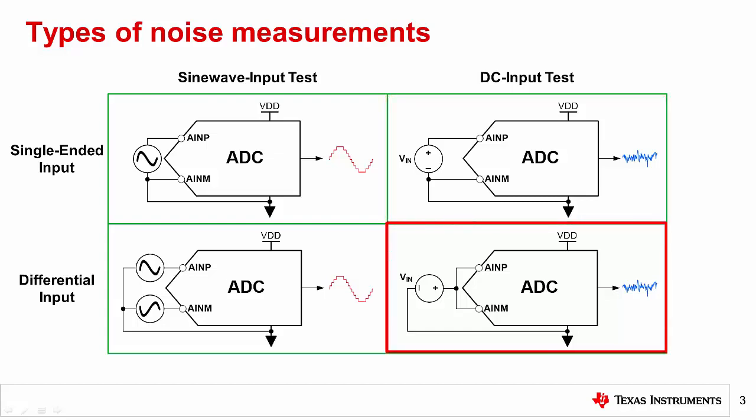For differential ADCs, the device's inputs are typically shorted together to mid-supply. With a zero-volt input, no reference noise is present in the measurement. Therefore, the input-short variation of the DC input test provides the purest measurement of an ADC's intrinsic noise. Higher resolution ADCs primarily use this method since low noise performance is critical. Let's take a look at an ADC that includes both sine wave input and DC input measurements to better understand how noise is represented in an ADC's datasheet.